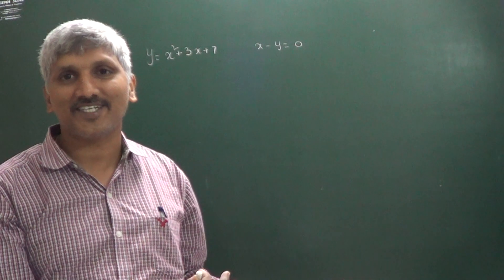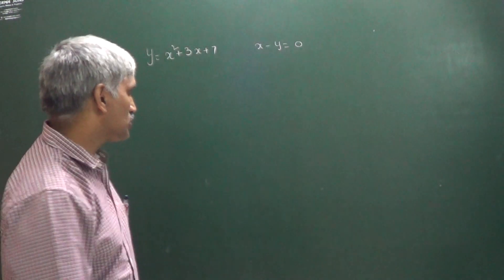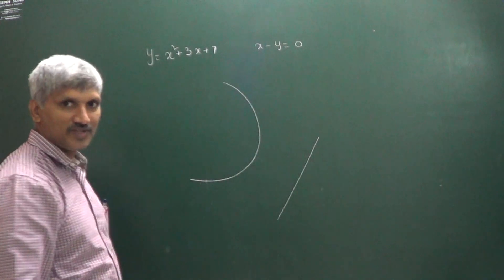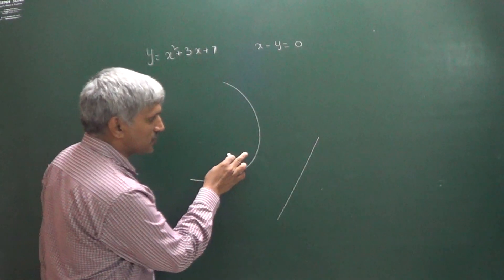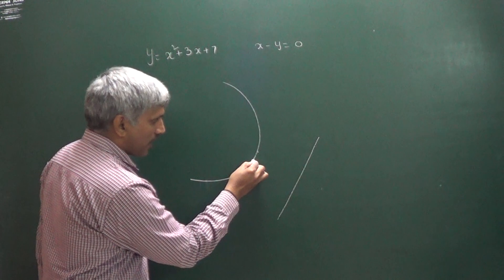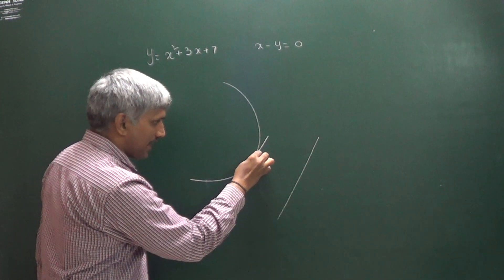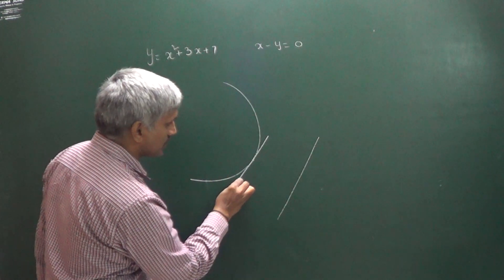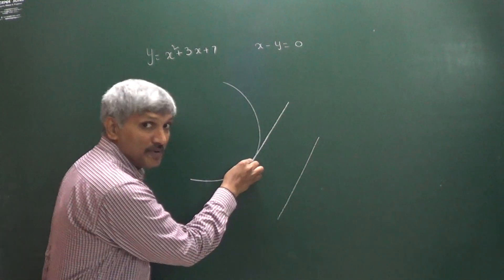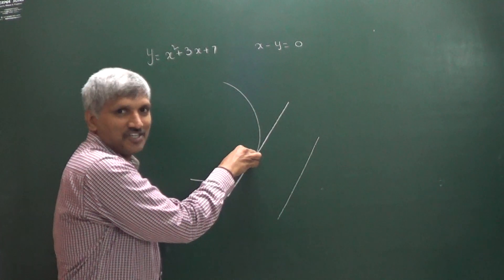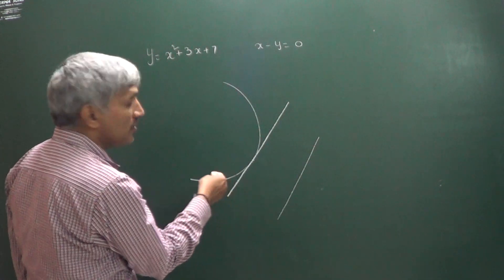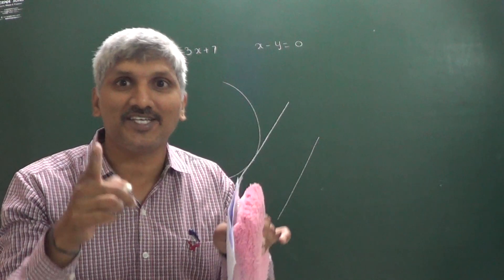Since they are not intersecting — once they intersect, the minimum distance becomes 0 — the parabola and line are separate. We take a point on the parabola and draw a tangent at that point such that the tangent is parallel to the line. This means the differentiation at that point equals the slope of the line.